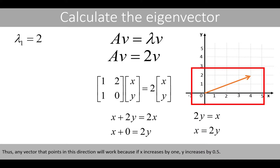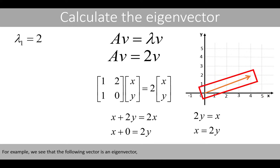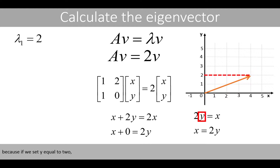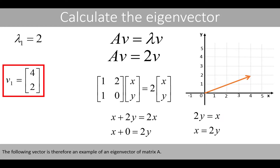Thus, any vector that points in this direction will work because if x increases by 1, y increases by 0.5. For example, we see that the following vector is an eigenvector because if we set y equal to 2, x is equal to 4. The following vector is therefore an example of an eigenvector of matrix A.